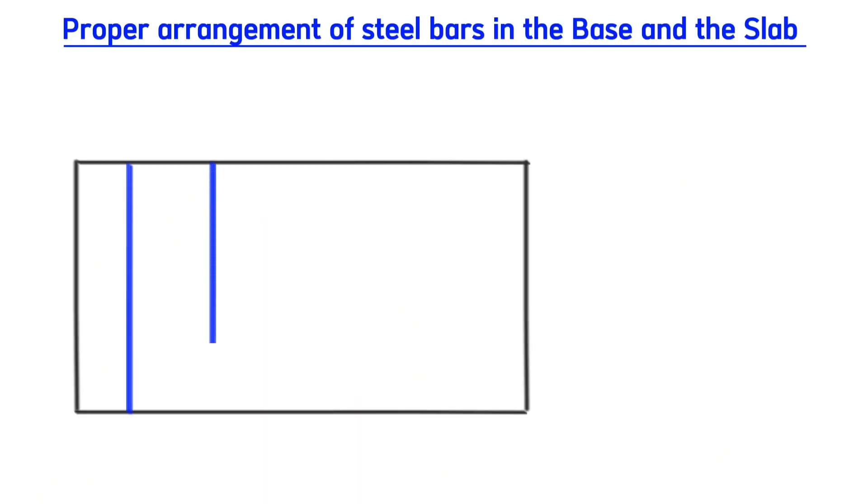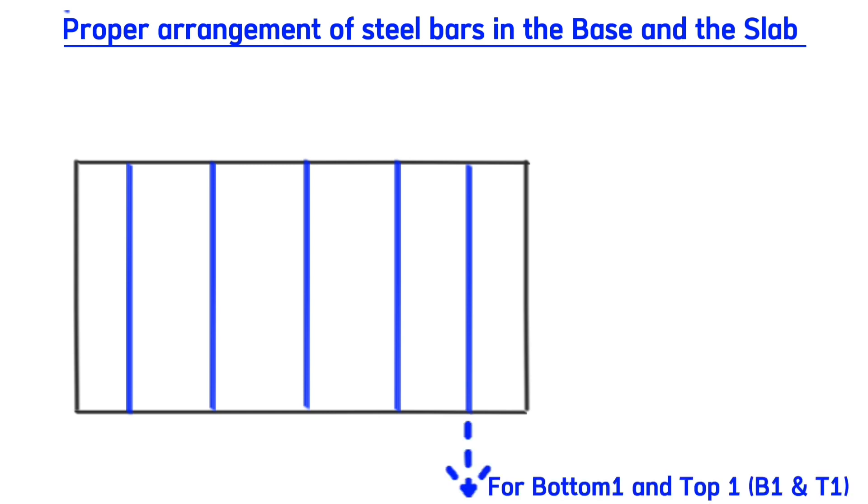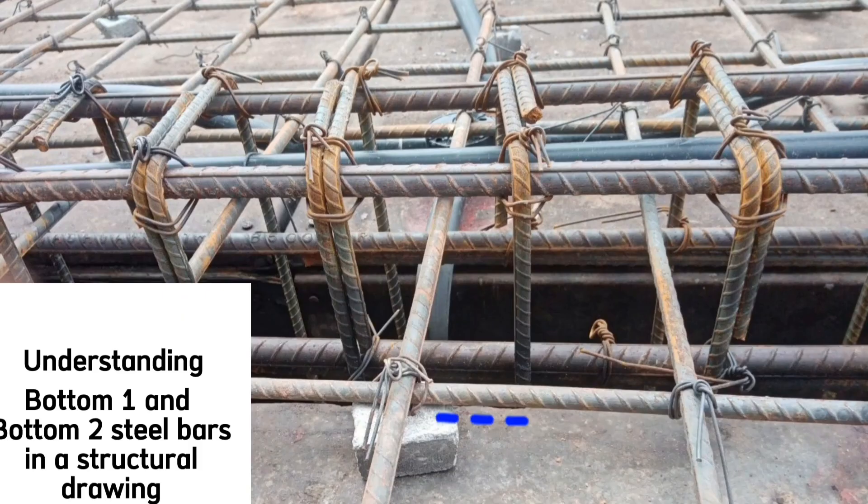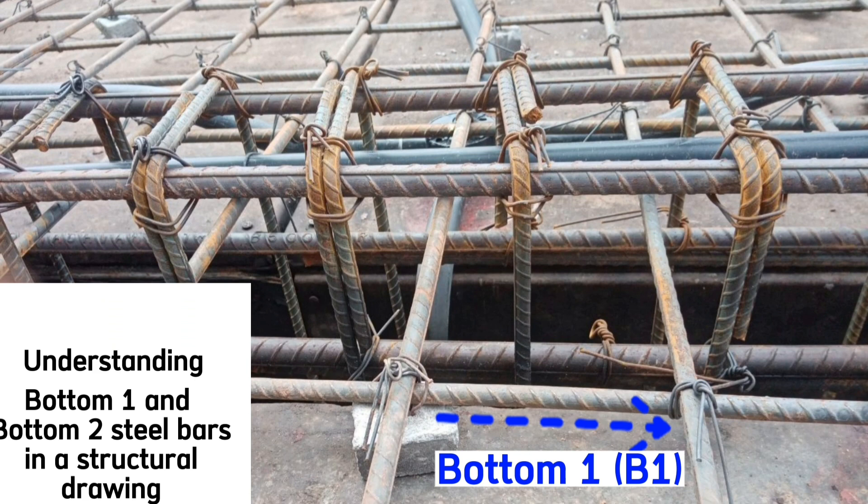When arranging steel bars in the base or in the slab, we begin with steel bars along the shorter side, then we tie those along the longer side later due to sagging and bending moments. Therefore, these first bars that we align in this direction are called bottom one, then these ones that we tie later on top of bottom one are called bottom two steel bars.